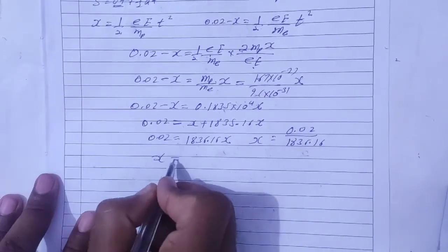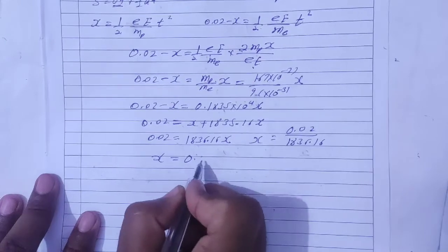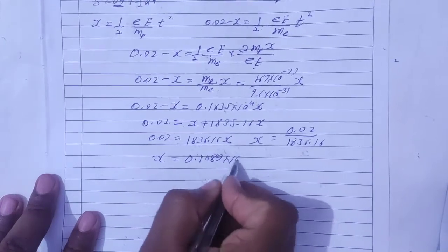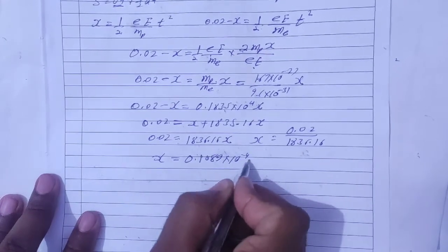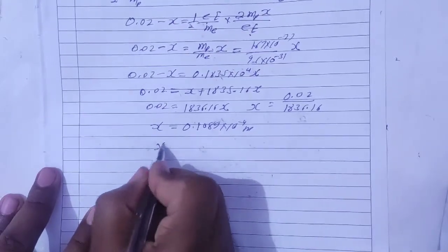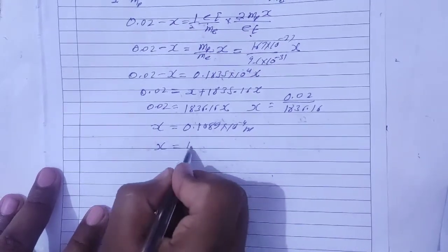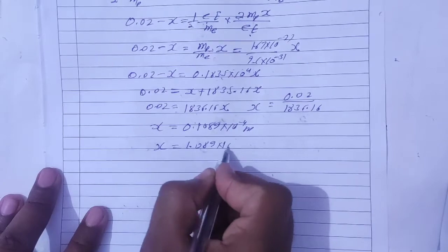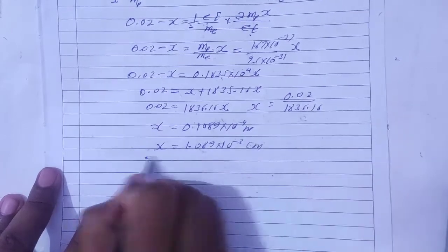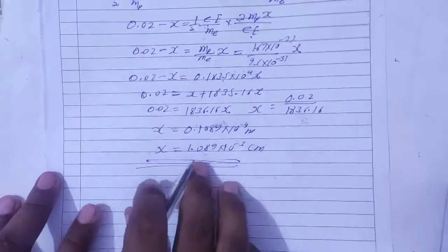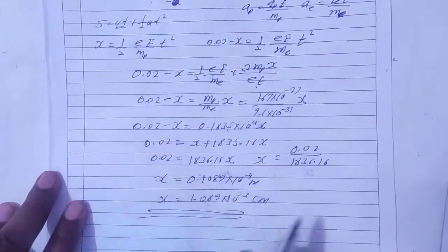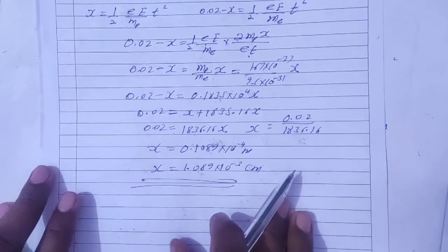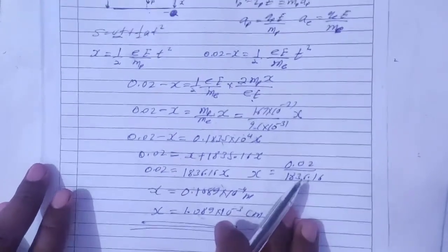So x equals 0.1089 times 10 to the power minus 4 meters, which in centimeters is 1.089 times 10 to the power minus 3 centimeters. Therefore, the distance from the negative plate is 1.089 times 10 to the power minus 3 centimeters.